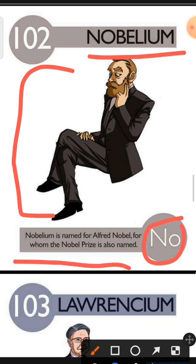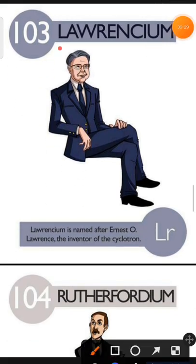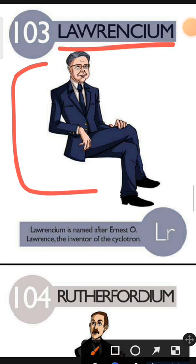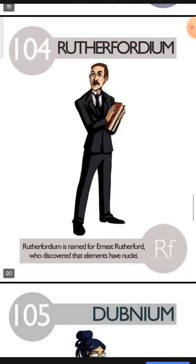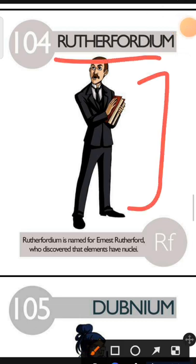Element number 103 is Lawrencium. The characteristic of Lawrencium is: Lawrencium is named after Ernest Lawrence, the inventor of the Cyclotron. Element number 104 is Rutherfordium. The characteristic of Rutherfordium is: Rutherfordium is named for Ernest Rutherford who discovered that elements have nuclei.